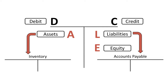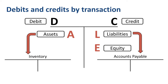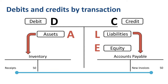Let's connect the two examples by looking at debits and credits by transaction. One number was mentioned in both examples: 50. The inventory that was received during the accounting period was not paid for immediately. The company received the inventory as well as an invoice from the supplier. The journal entry for this is: debit inventory for 50, credit accounts payable for 50. Every transaction has debits and credits, and at least two accounts are affected. For each transaction, the total of all debits equals the total of all credits.